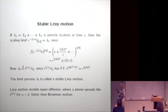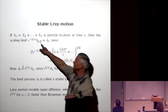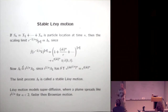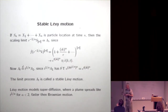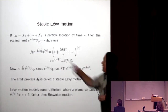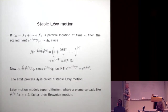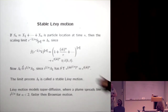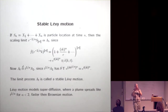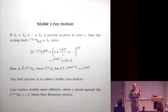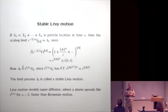For stable Lévy motion: take particle jumps with that power law distribution, expand the time scale by r, and shrink the spatial scale by r^(1/α). The limit is e^(t(ik)^α) — the Fourier transform of Lévy stable densities. The key difference: instead of spreading like t^(1/2), particles now spread like t^(1/α), and since α < 2, this is faster — superdiffusion. For example, if α = 3/2, the spread goes like t^(2/3), which is faster than t^(1/2).